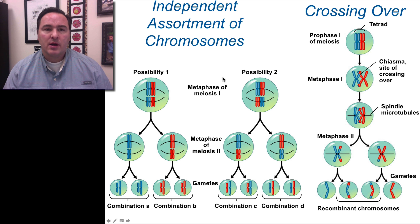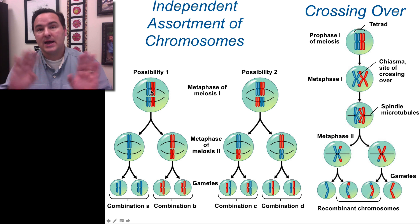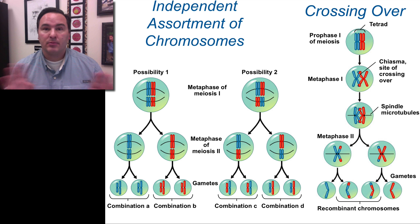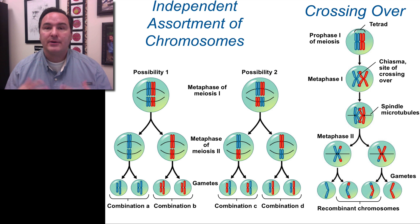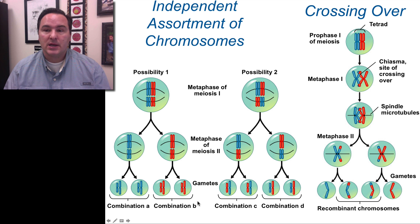Also recall that we talked about independent assortment of chromosomes — that it doesn't matter which way these chromosomes line up, whether it's red on one side or blue on the other side. It doesn't matter. It's kind of a random process, and so you can end up with lots of different gametic combinations.